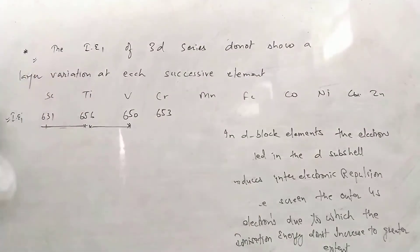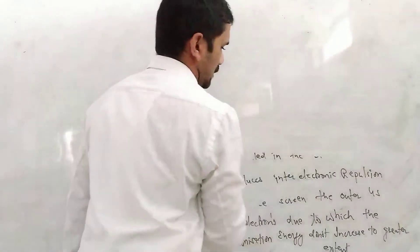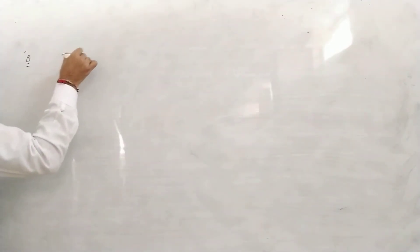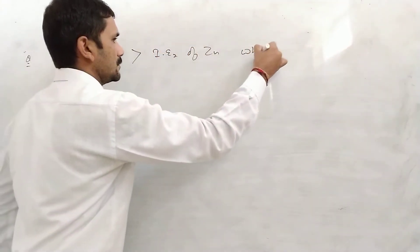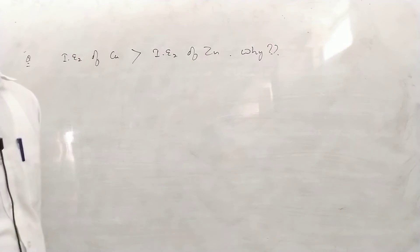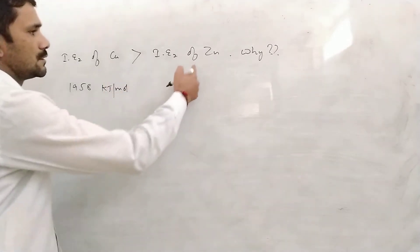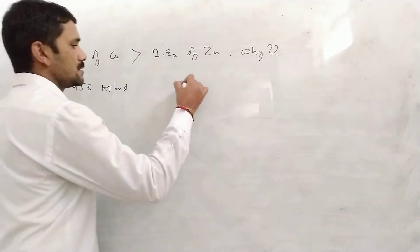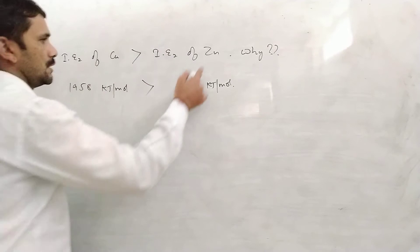One more question you can see on the ionization energy data: IE2 of copper is greater than IE2 of zinc. Why? Looking at the data, copper's second ionization energy is 1958 kJ/mol and zinc's second ionization energy is 1734 kJ/mol. So copper's second ionization energy is greater than zinc's second ionization energy. Let's explain the reason.